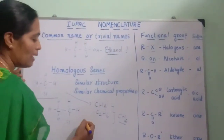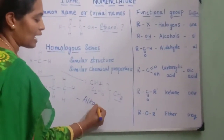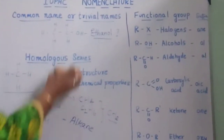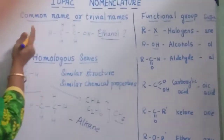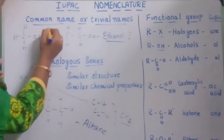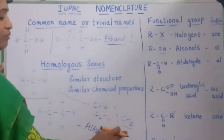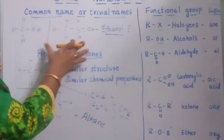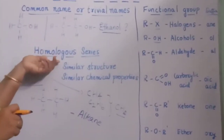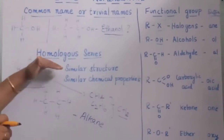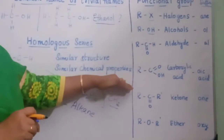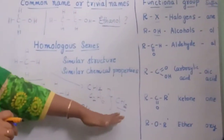These two compounds belong to the homologous series called alkanes. Now let us take one more compound — methanol. When you compare methanol and ethanol, the difference again is the same CH2 group, and they have similarity in structure and also in chemical properties. Because of this reason, they belong to the homologous series of alcohols. So to revise: homologous series are a group of organic compounds which possess similar structure and similar chemical properties, and they differ from each other only by a CH2 group.